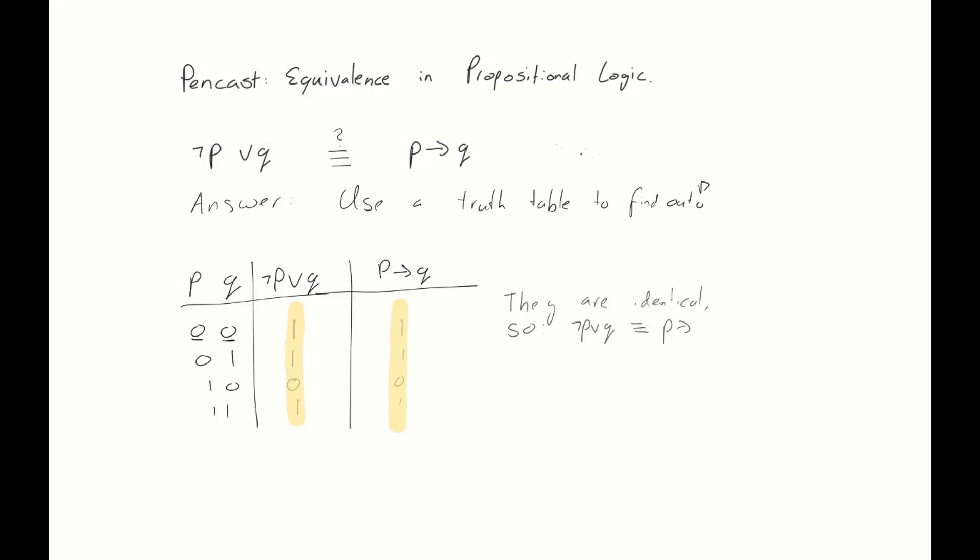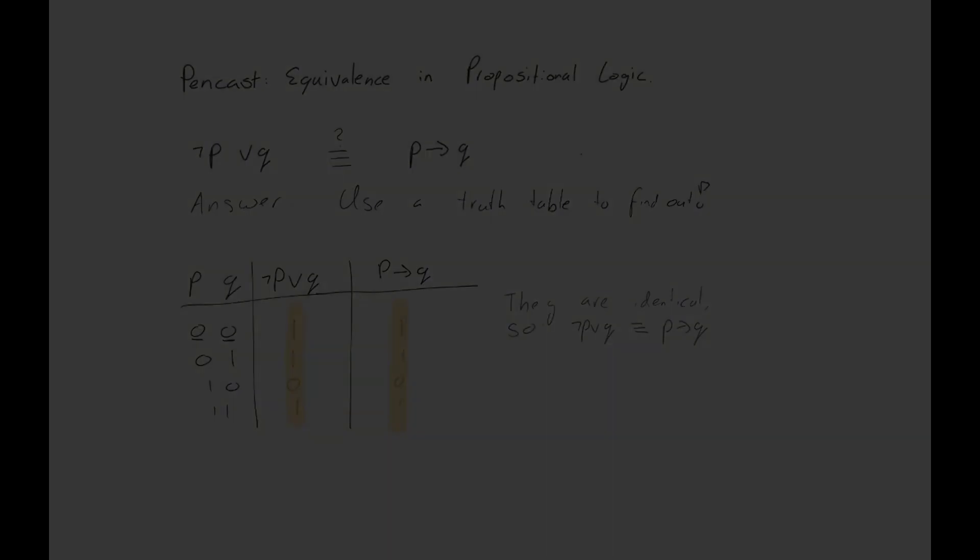In this video we're going to take a look at two more examples. So for the second set of propositions that we're going to compare we are going to take P implies Q or P and we ask ourselves the question whether that is equivalent to P if and only if Q or P if and only if not Q.